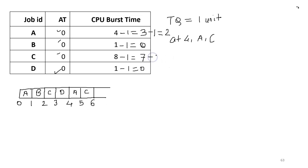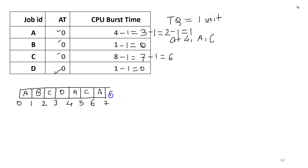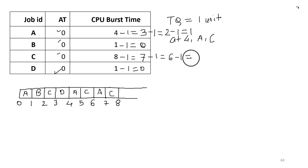After C, A will get the CPU for one unit; total time is seven. The remaining time of A is one. After A, C will get the CPU for one unit; total time is eight. The remaining time of C is five.